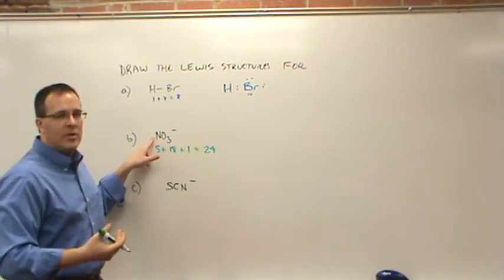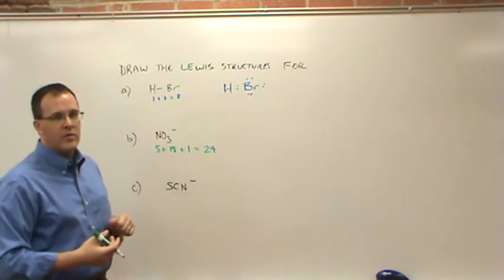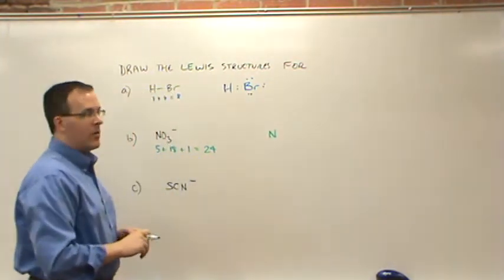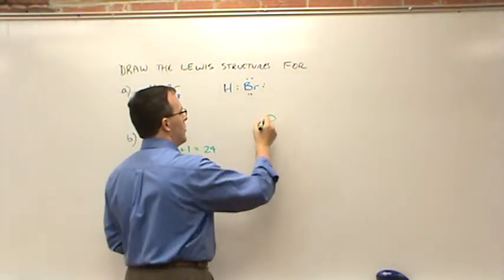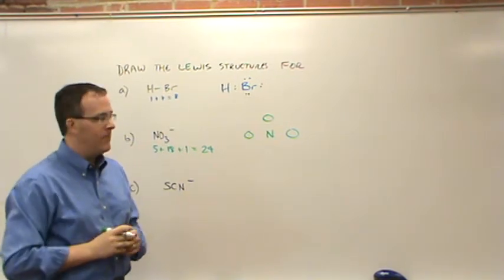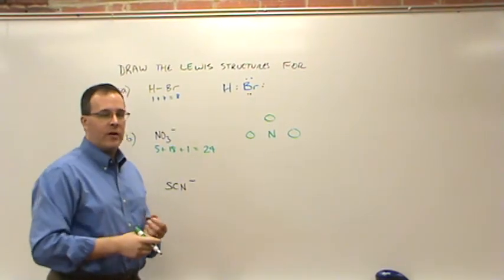Now, whenever we have multiple atoms like this, we want to pick the single atom and put it in the center. So we're going to put that single N there, and we're going to put our O's around the outside. It doesn't really matter how you arrange them, as long as they're around the N. And now we're going to start adding our electrons.